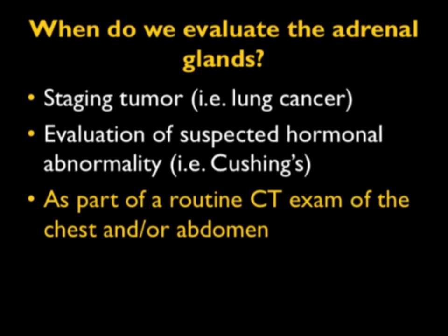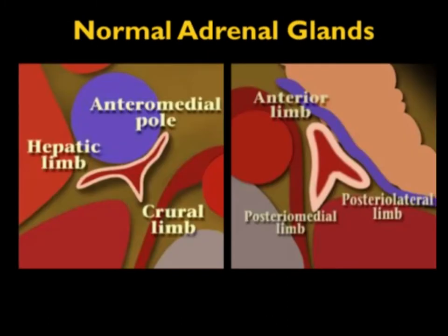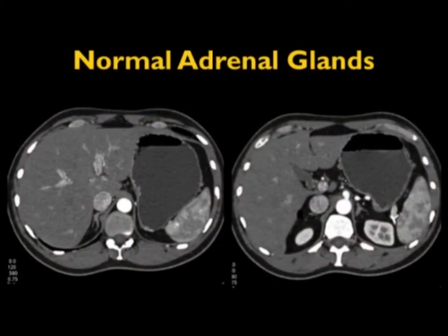Most commonly it's as part of a routine exam of the chest or abdomen. When you look at the adrenals, this is a very nice schematic and it makes the point that the adrenals vary in shape, not only from right to left side, but also individually from patient to patient.